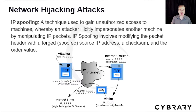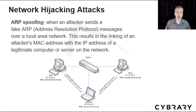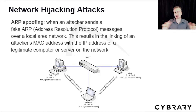ARP spoofing is another form of a network hijack attack. ARP operates on layer 2 of the OSI model. It's when an attacker sends a fake ARP — address resolution protocol — message over a local area network. This results in the linking of an attacker's MAC address with the IP address of a legitimate computer or server on the network.